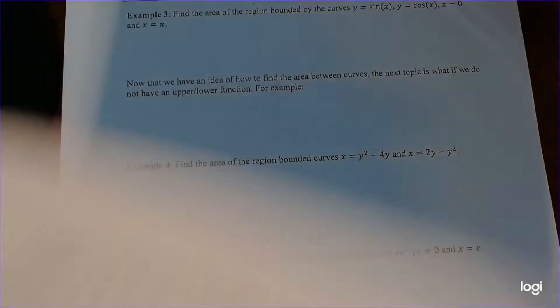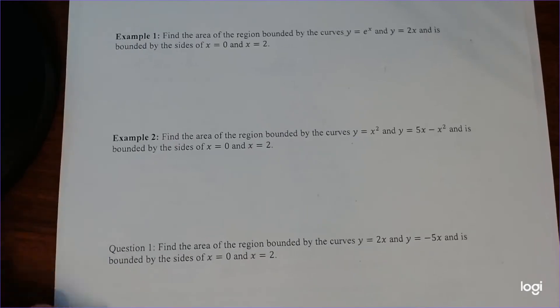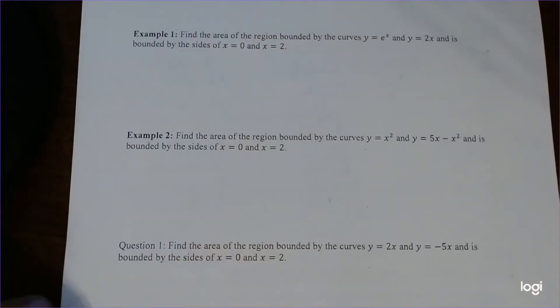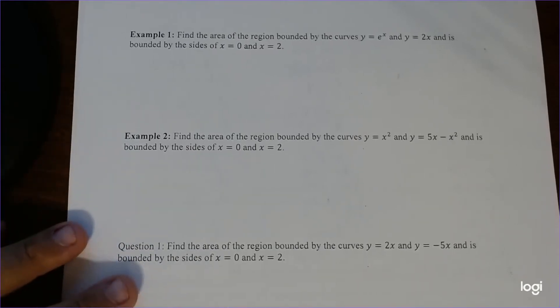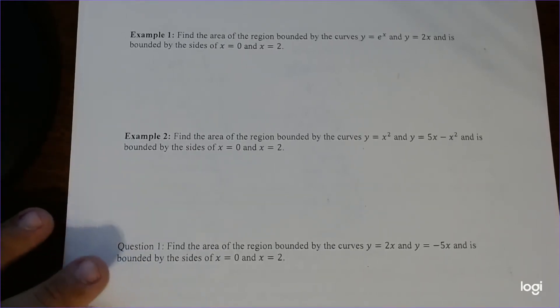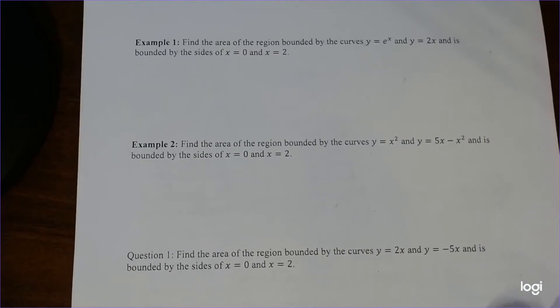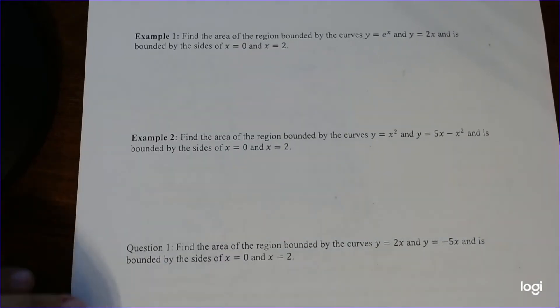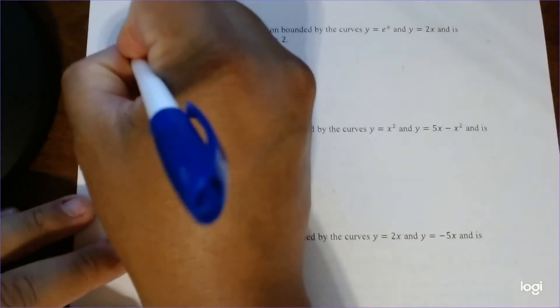Let's try some examples. The first example: find the area of the region bounded by the curve y=e^x and y=2x, bounded by the sides x=0 and x=2. First we've got to figure out which is the top and which is the bottom, because if you do the opposite you get a different answer. Let's quickly draw this and see what's going on.